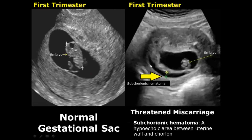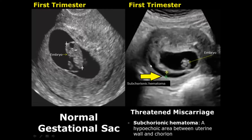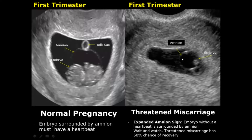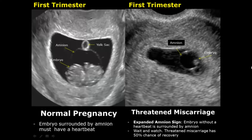A subchorionic hematoma appears as a hypoechoic area between the uterine wall and the chorion. An expanded amnion sign is another feature of threatened miscarriage, in which the embryo without a heartbeat is surrounded by amnion. However, this is not a sure sign of a failed pregnancy — just as a threatened miscarriage is not a sure sign of failure, it has a 50% chance of recovery.